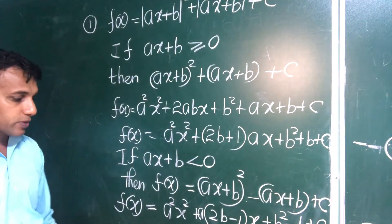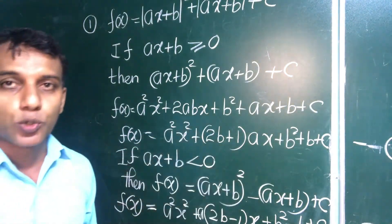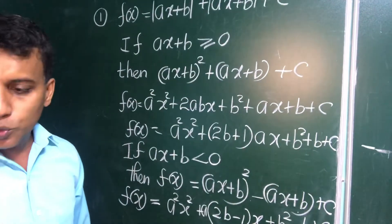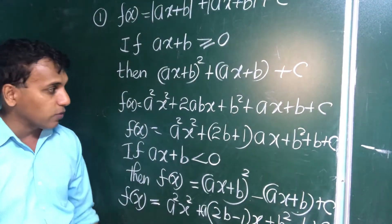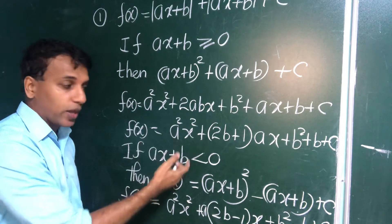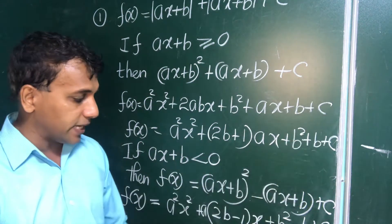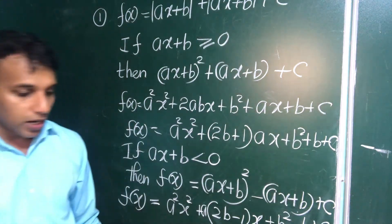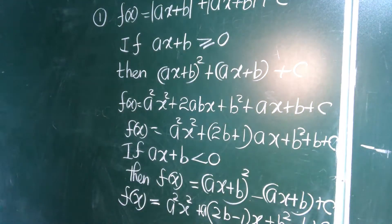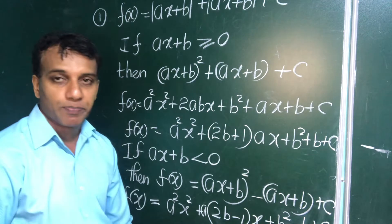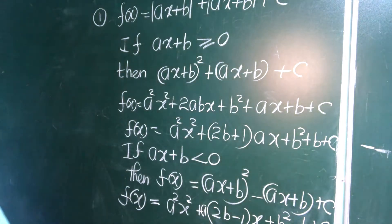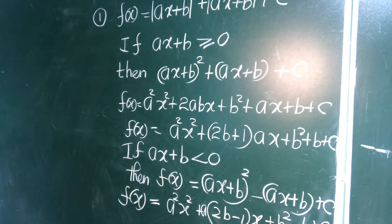So there are two quadratic equations. The first: a squared x squared plus (2b + 1)·a·x plus b squared plus b plus c equals zero. The second: a squared x squared plus (2b − 1)·a·x plus b squared minus b plus c equals zero.